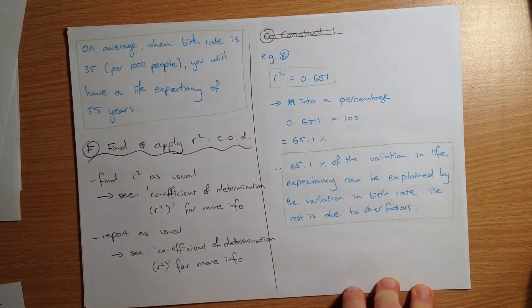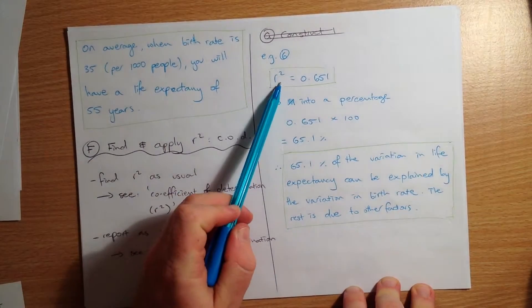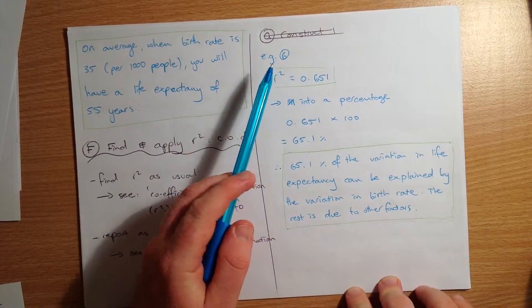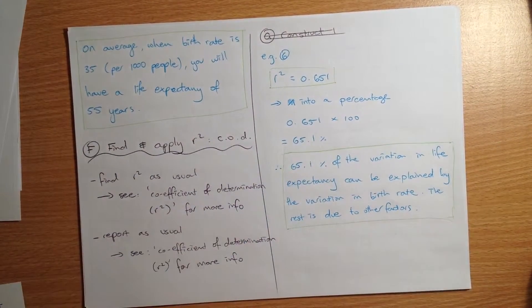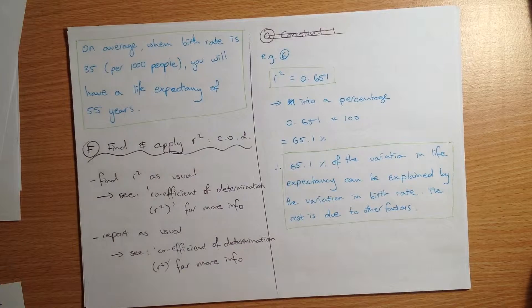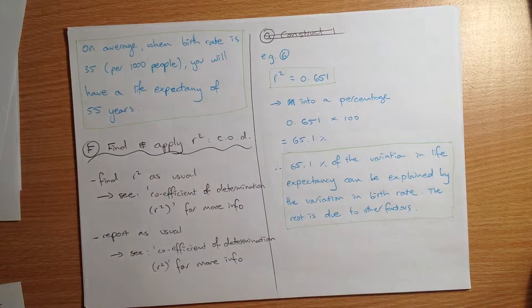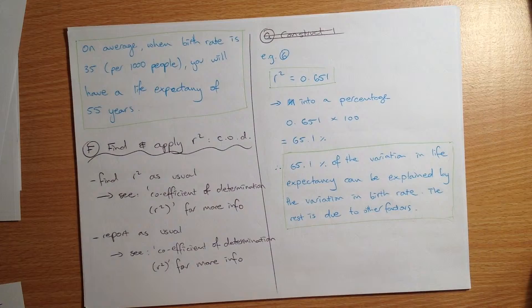For our particular data that we've been looking at throughout this section, our R squared value was 0.651, and I turned that into a percentage, 65.1%. So my report says 65.1% of the variation in life expectancy can be explained by the variation in birth rate, the rest is due to other factors.